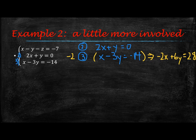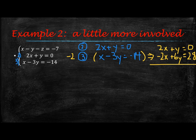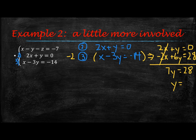I'll still have equation 2 above it: 2x plus y equals 0. Now, if I add those up, the x terms cancel, and so I'll have 7y equals 28. That allows me to solve for y by dividing both sides by 7, so y is equal to 4.